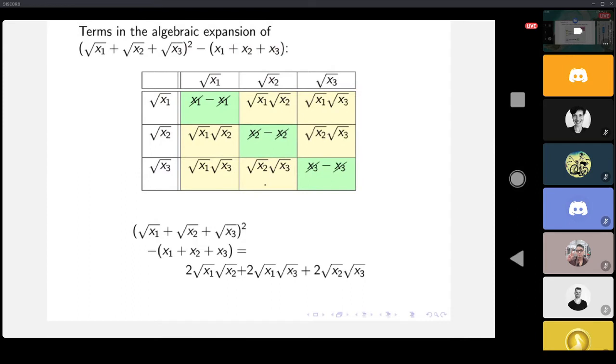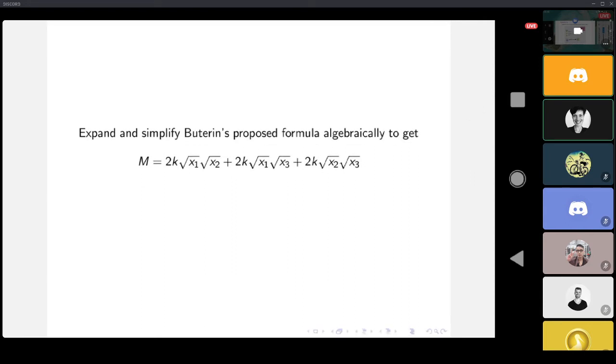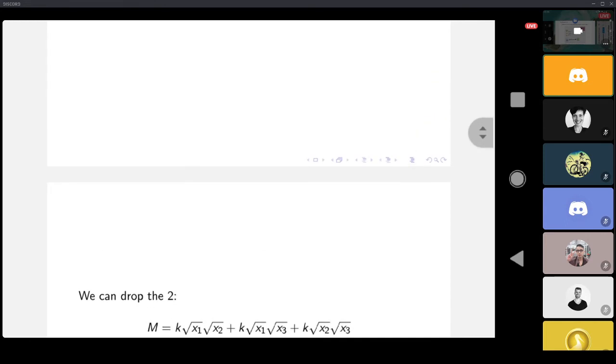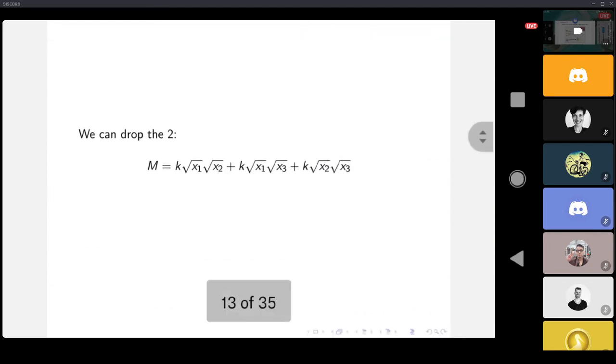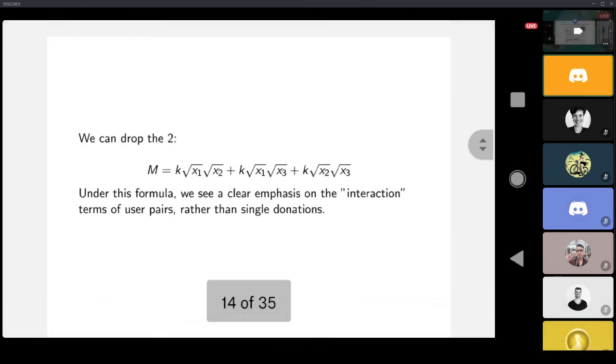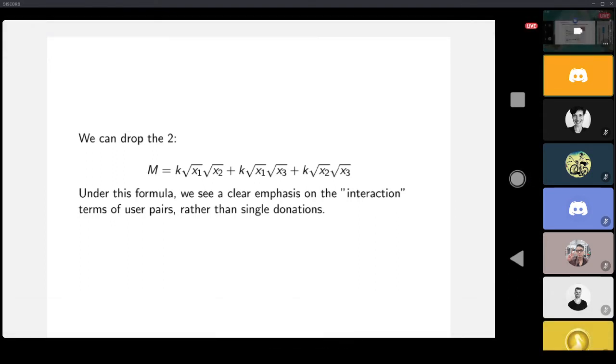If you expand and simplify this for three donations, you get a modified formula that looks like this. You can drop the 2 because when you go to calculate everything, all the twos are going to cancel out anyway, and also k is a constant. But doing that little bit of math, now what you see is that this places a clear emphasis on the interaction in the pairs of users rather than on the single donations. Again, as a formula it's really just subtractive, but it shifts our perspective on what we're looking for - we're adding up the square roots and squaring, now we see the interaction between user pairs.